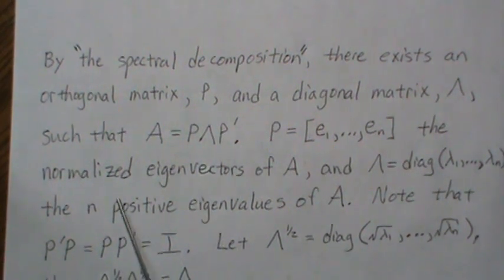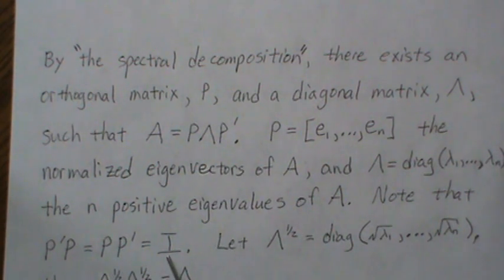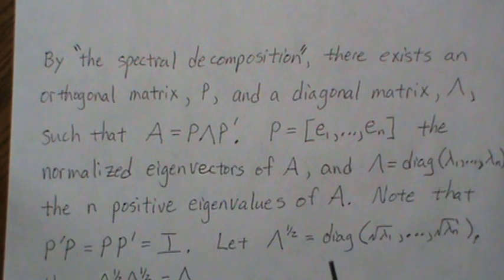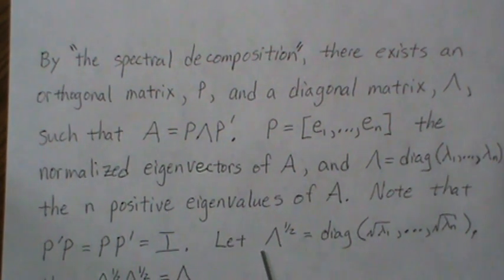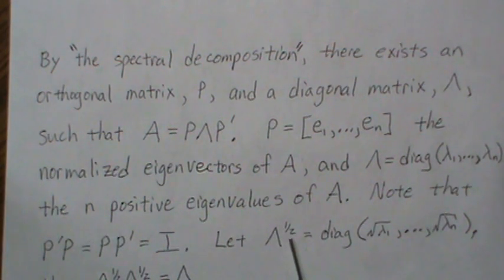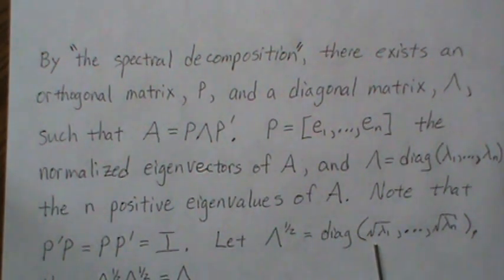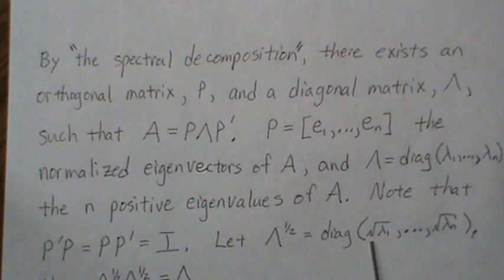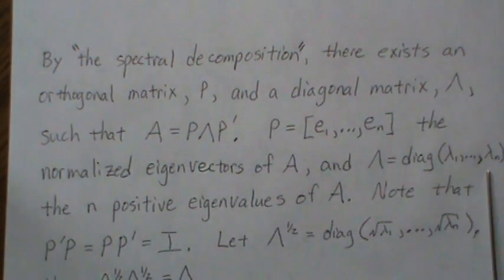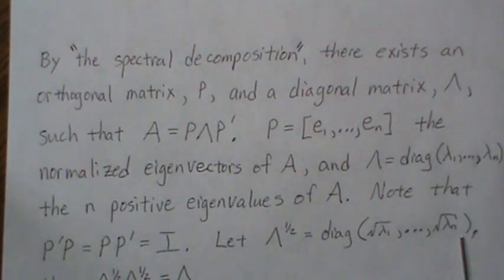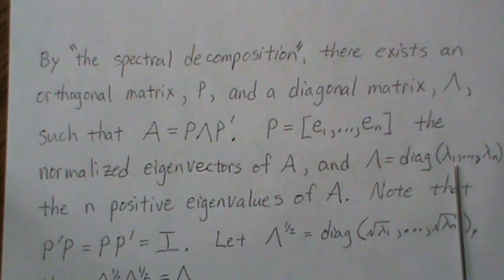So note that because they're normalized eigenvectors, P prime P and P P prime is equal to the identity matrix — that's just by definition of what we mean by normalized eigenvectors. So if we let lambda to the one-half be a diagonal matrix with the diagonal elements equal to the square root of the eigenvalues, it's very similar to lambda, but we're going to take the square root of each eigenvalue as opposed to just the eigenvalue.